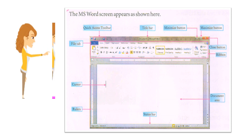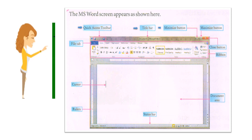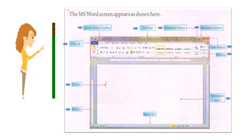The MS Word screen includes the following components: Quick Access Toolbar, Title Bar, Minimize Button, Maximize Button, File Tab, Close Button, Ribbon, Cursor, Document Area, Rulers, and Status Bar.